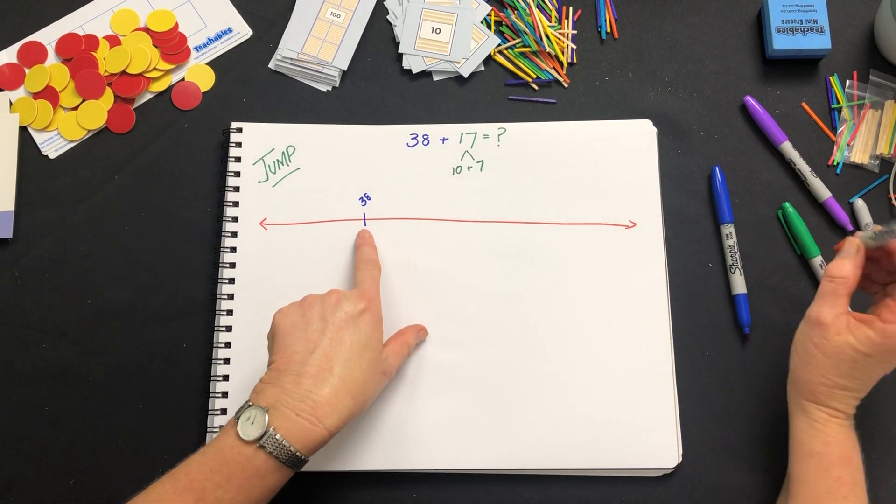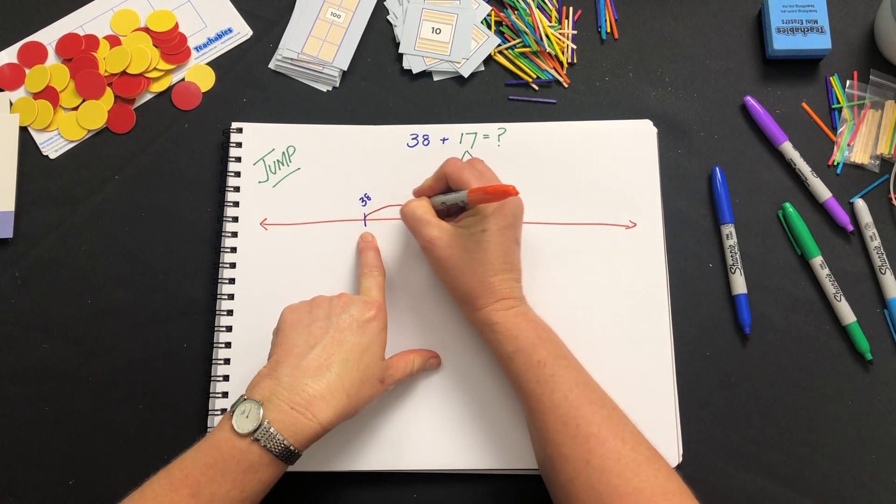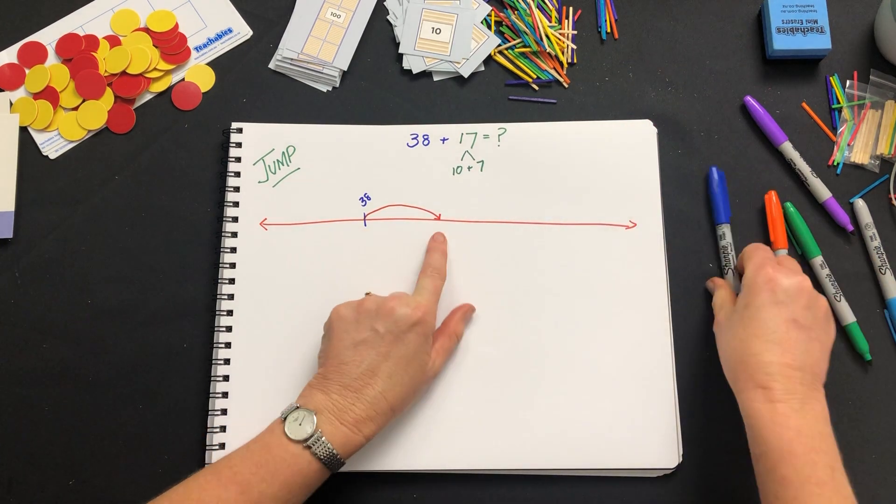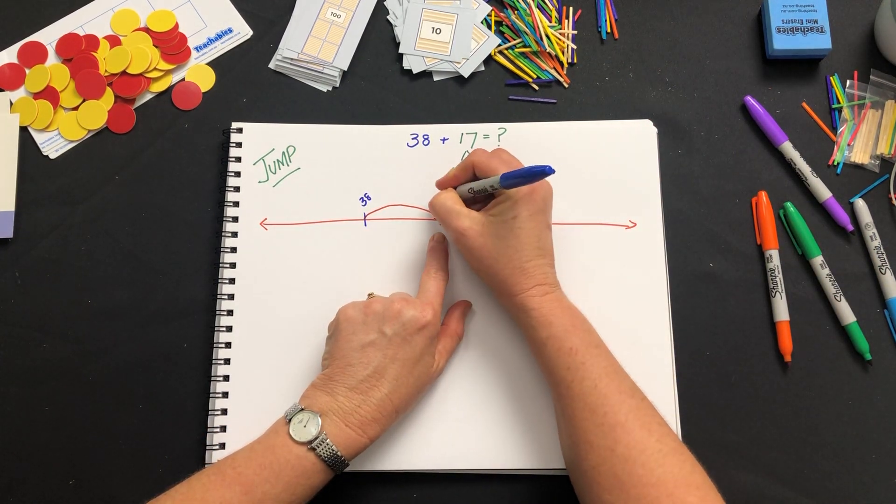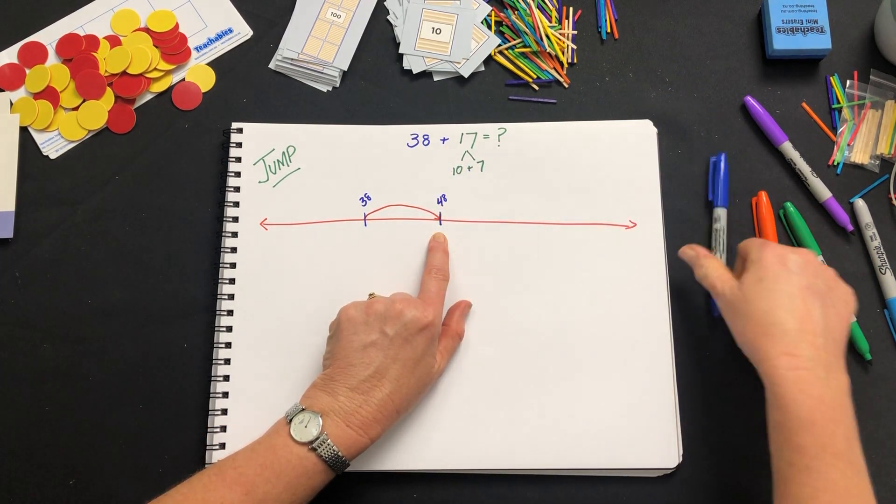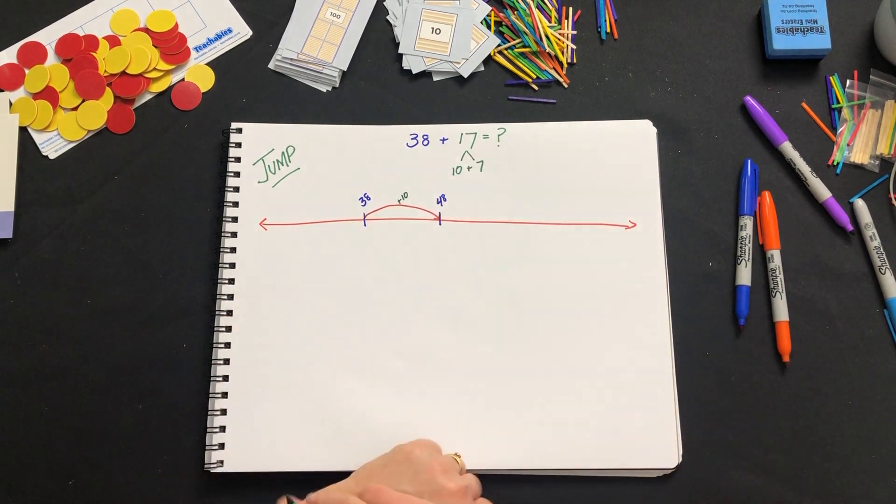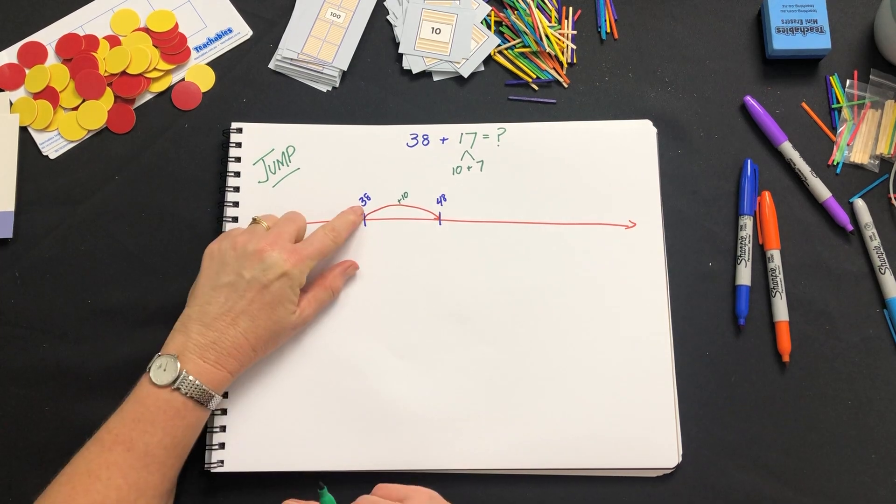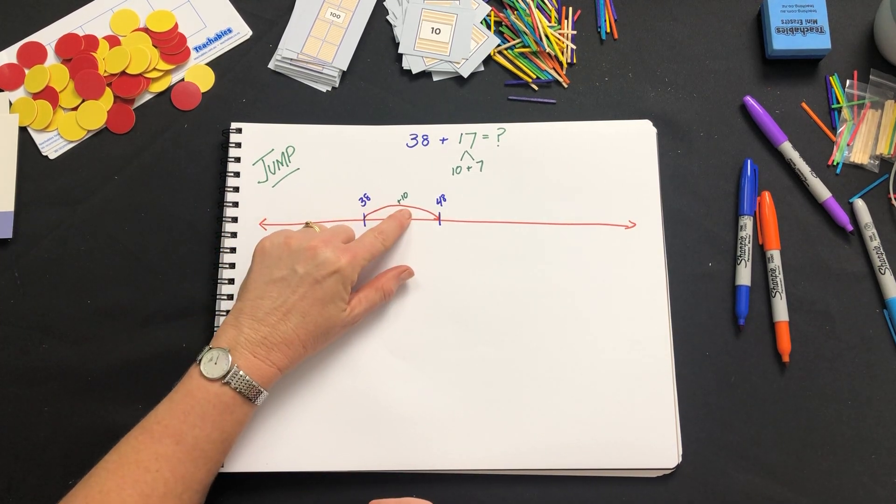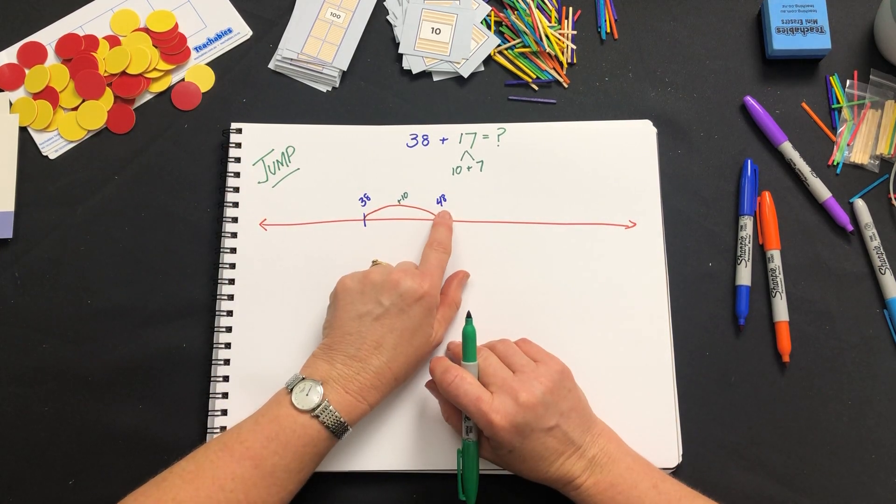So I could do one jump from my 38 to 48 by adding the 10 and that's taking advantage of my understanding of place value. I had three tens here, I've added another ten so I've now got four tens.